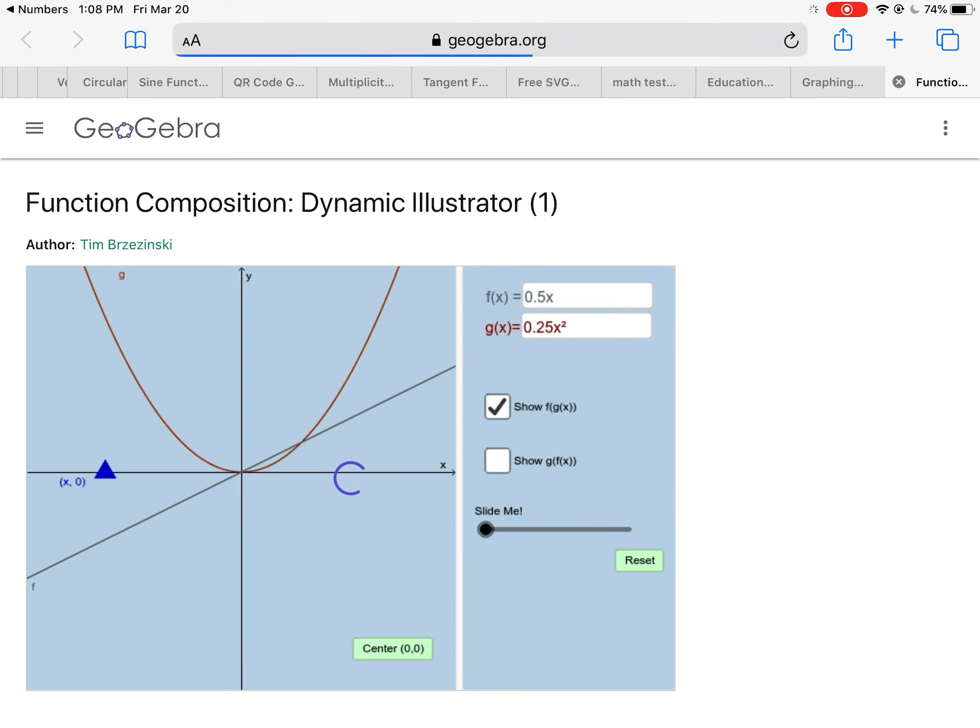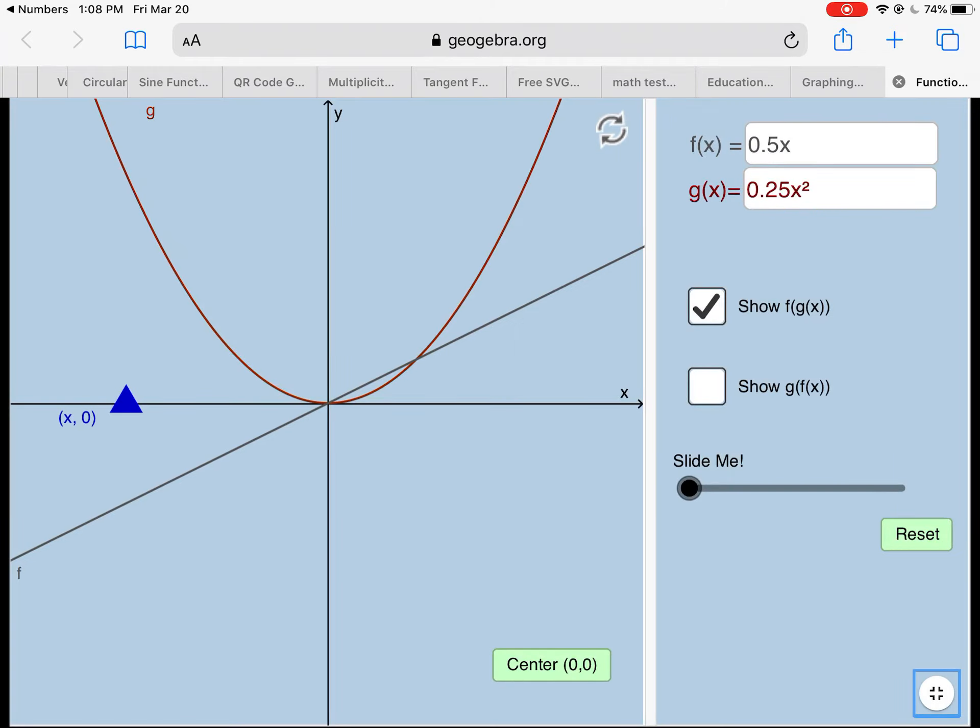Open this GeoGebra applet up. Hopefully it loads. There we go. All right, so you can see I have two functions: f of x equals 0.5x, that's the line that you see graphed, and then g of x equals 0.25x squared, that's the parabola that you see graphed.